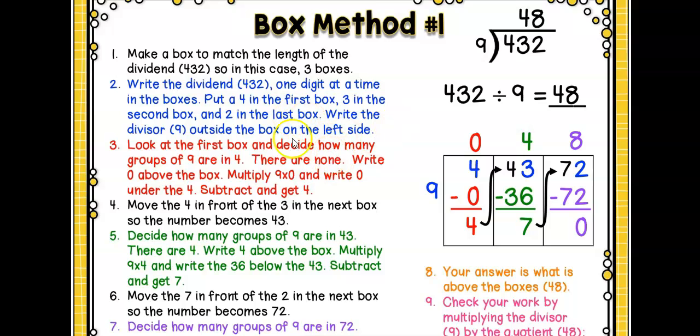Then you're going to look at the first box and decide how many groups of 9 are in 4. Well, there's no groups of 9 in 4, right kiddos? So, you're going to write a 0 above the box, and then you're going to multiply the 9 by the 0, and you will get 0. So, then you're going to have 4 subtract 0 equals 4, and you're going to bring that 4 up here, and that will become 43 over here. Then, you need to decide how many groups of 9 are in 43. There are 4. So, you're going to write a 4 up here on top of the box, multiply the 4 and the 9 to get 36. Then, you subtract 36 from 43, and you get 7. You're going to take that 7, and you're going to move it up here next to that 2, and that becomes 72.